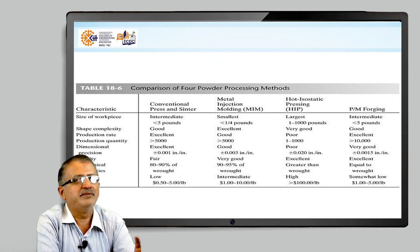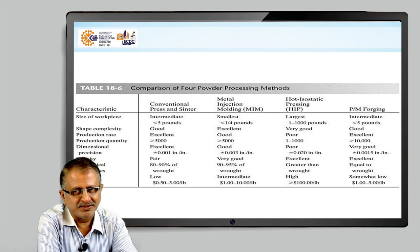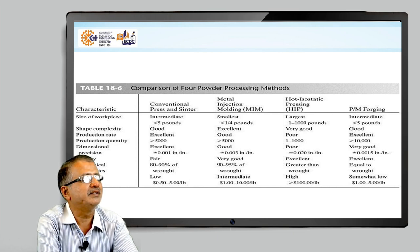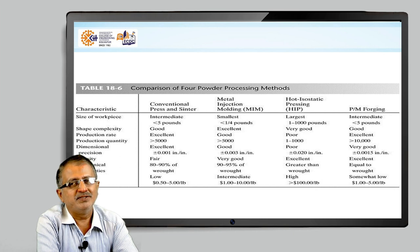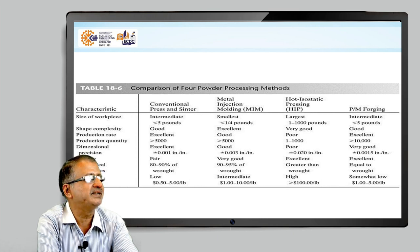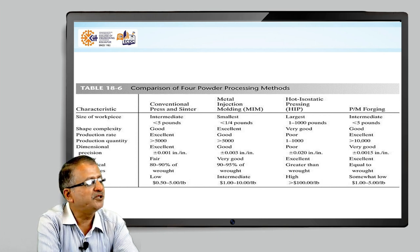Different processing methods include cold compaction and hot compaction, each with various sub-methods and its own significance. This slide gives an idea about powder processing methods, their characteristics, and the viability of each process. The first column covers characteristic aspects: size of the workpiece, shape and complexity, production rate, production quantity, dimensional precision, density, mechanical properties, and cost.